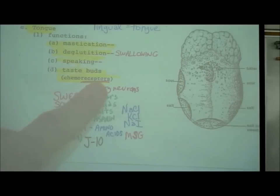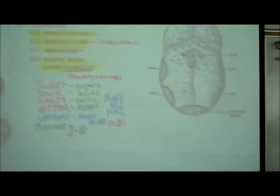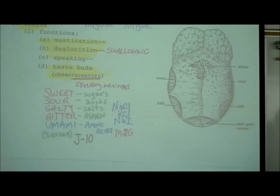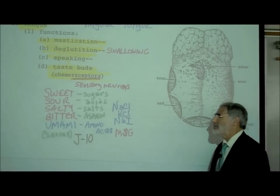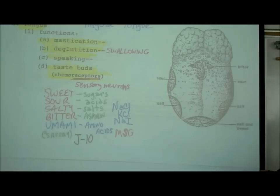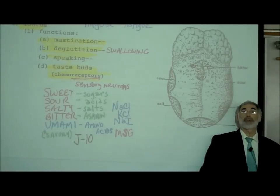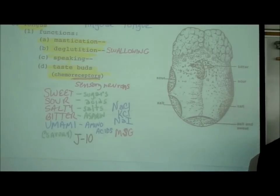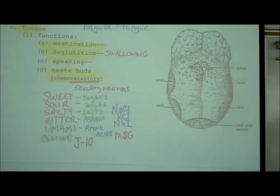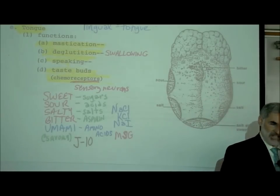Also on our tongue are taste buds. Taste buds are sensory neurons — they are a type of chemoreceptor. We've learned previously that sensory neurons commonly have that ending 'receptor.' We've mentioned proprioceptors, touch receptors, and nociceptors. Chemoreceptors are sensory neurons sensitive to chemicals.